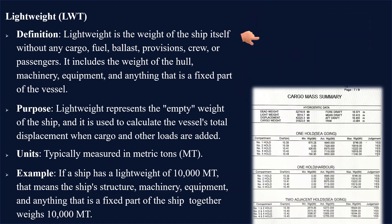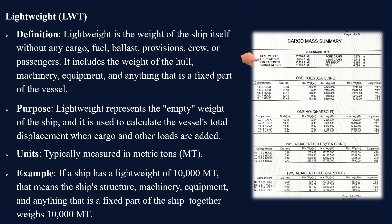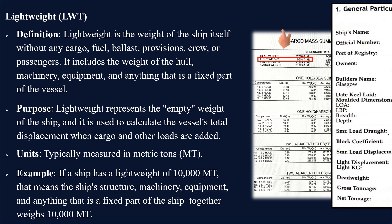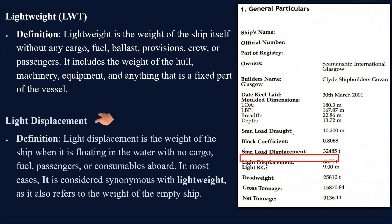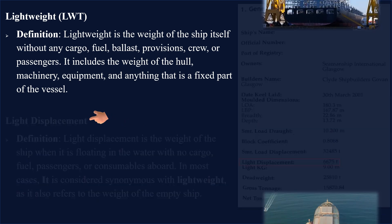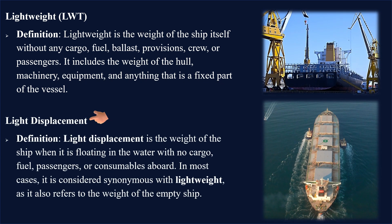On board, lightweight details can be found in several important documents and resources, one of which is the ship's stability booklet. You might also see it in some ships' general particulars, stated as displacement. Light displacement is the weight of the ship when floating with no cargo, fuel, passengers, or consumables aboard, and in most cases it is considered synonymous with lightweight, as it also refers to the weight of the empty ship.